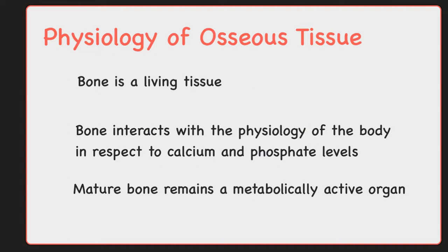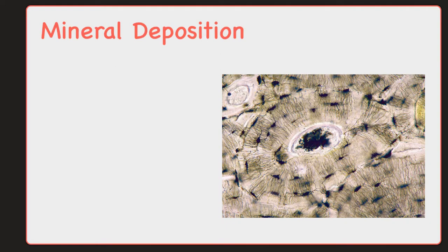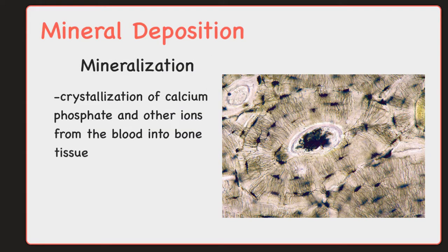Bone remodeling is one of those processes that continues throughout life. The bone tissue is also going to be able to exert a profound influence over the rest of the body, because it is going to be able to exchange minerals with tissue fluid and blood. Those minerals are going to be able to be exchanged throughout the body. Mineral deposition or mineralization is a crystallization of calcium phosphate as well as other ions from plasma into bone tissue. In this case, collagen fibers become encrusted with minerals that harden the matrix, and this is how bone is formed.